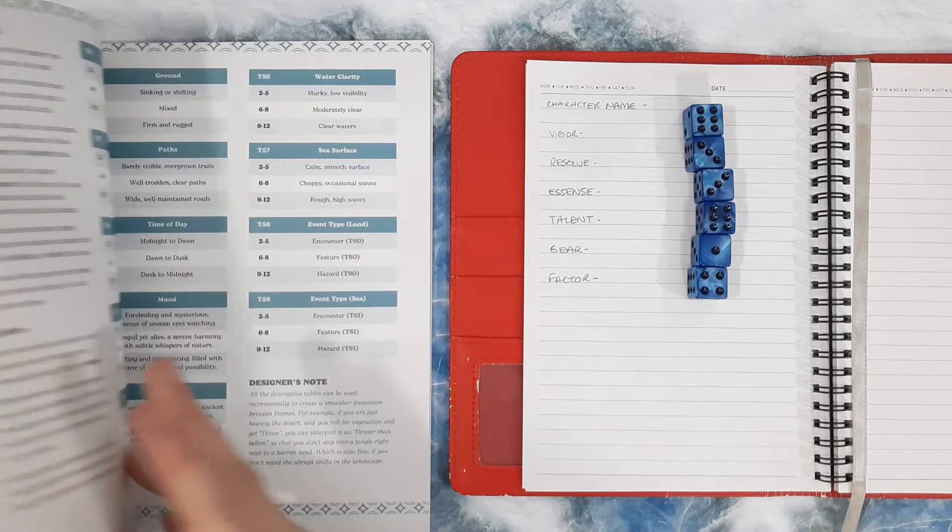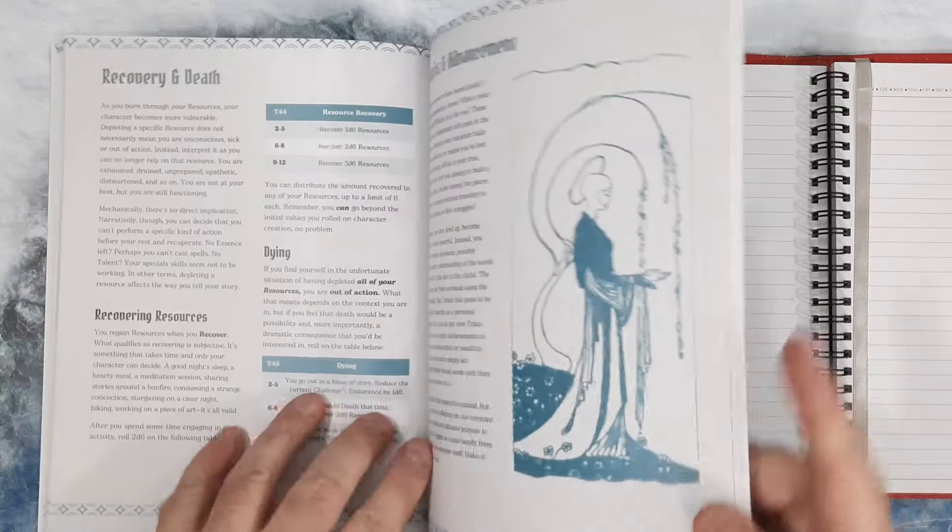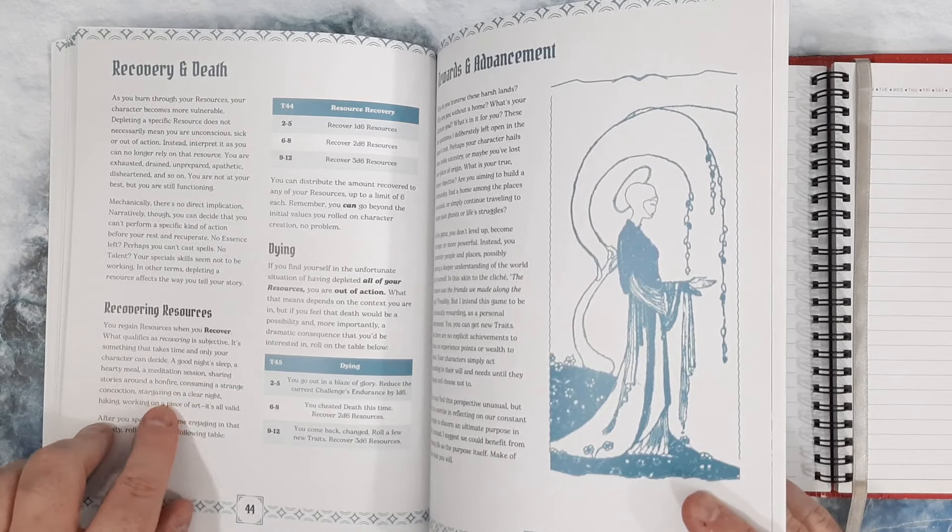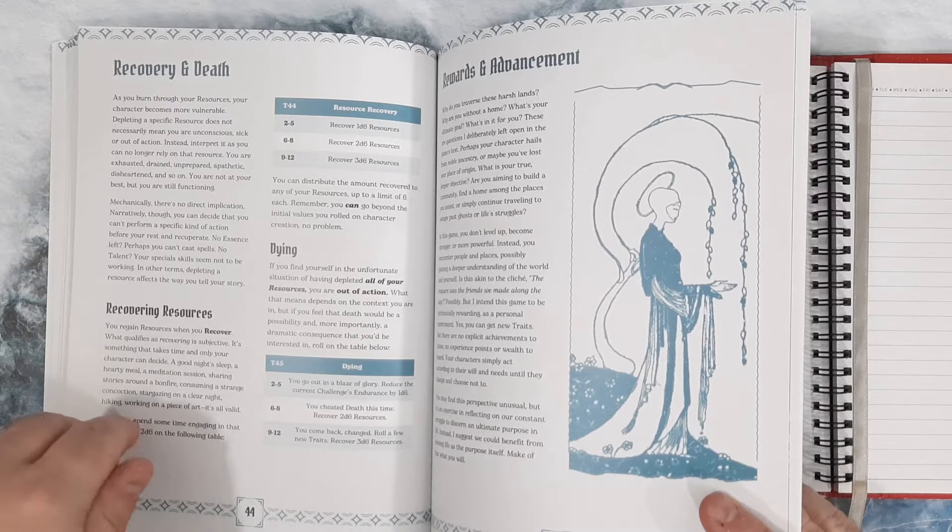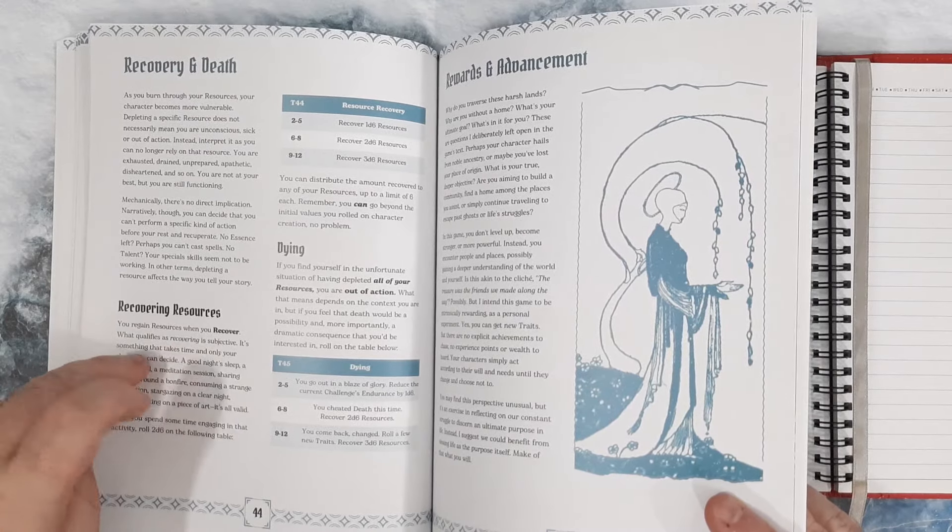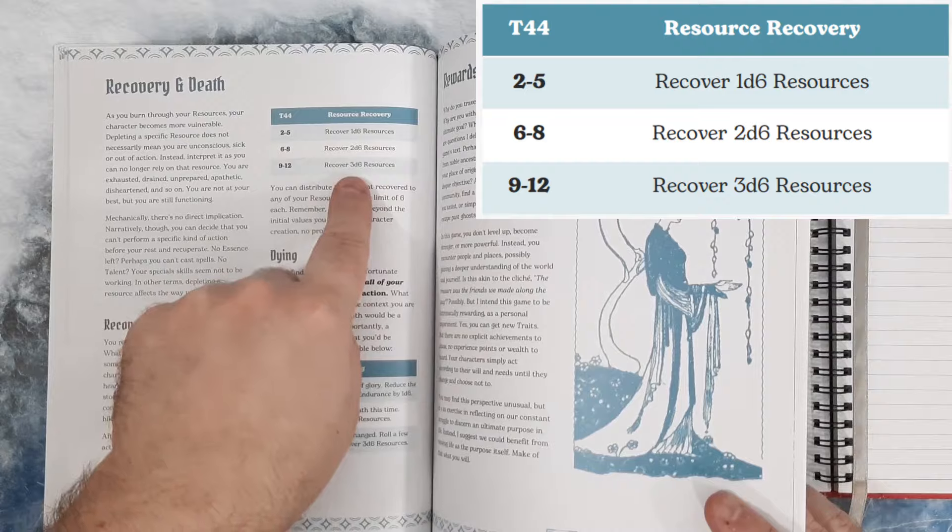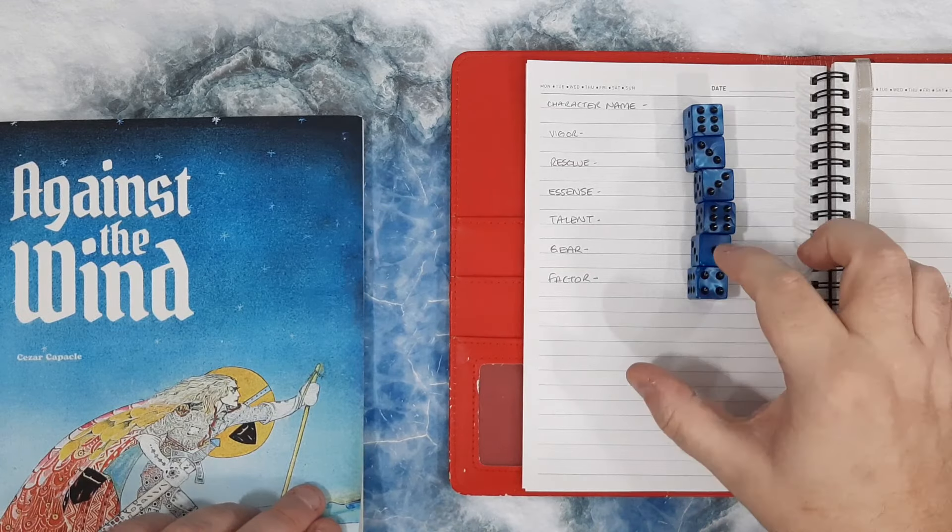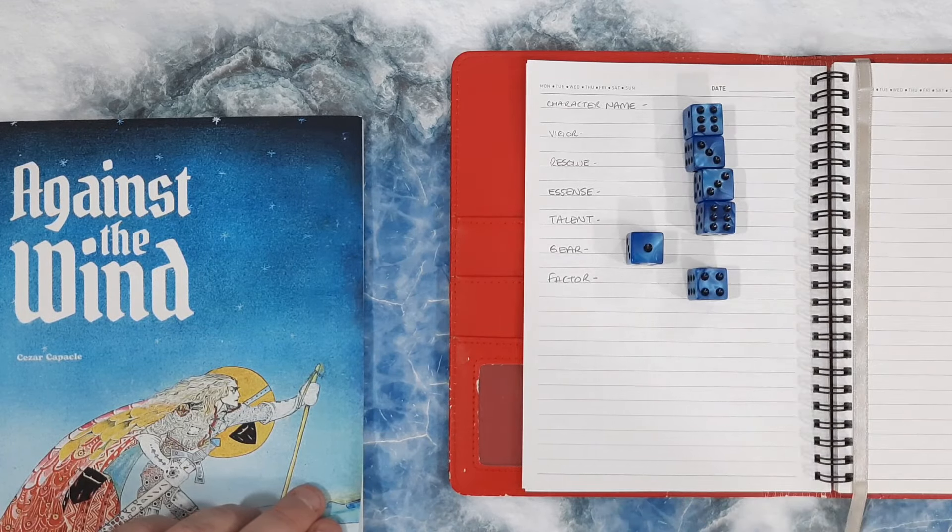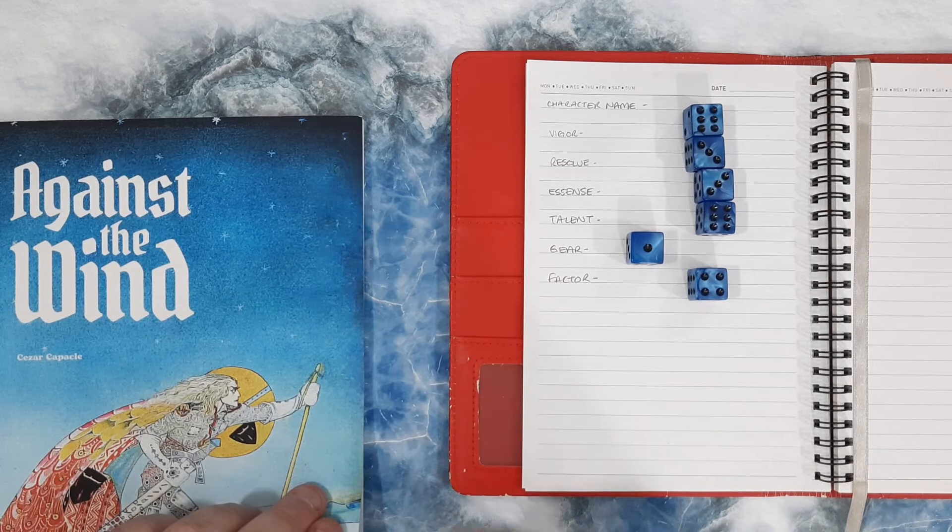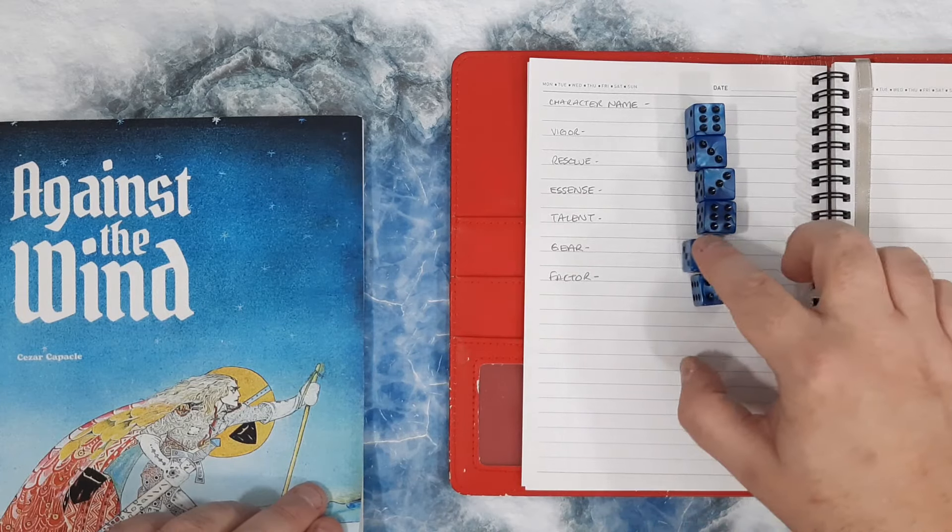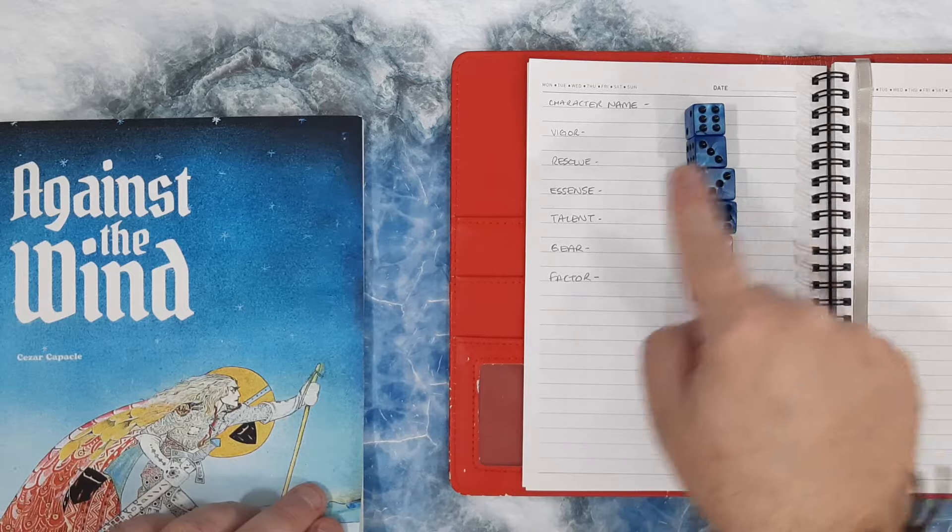Let me find the part. There we go, recovery. So when you get a good night's sleep, hearty meal, meditation, sharing stories, anything that counts as recovery or you rest, you basically then roll 2d6 and you can recover a certain amount of resources. And these can then be assigned however you want up to a maximum of 6. So even though my gear is currently at 1, as long as I sort of recover, recuperate, maybe I can sort of find some stuff and I can allocate 5 points into this, this will then become a 6. That's how it works.